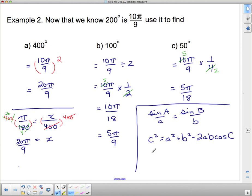...c squared equals a squared plus b squared minus 2ab cosine c. Or the rearranged version of that had cosine c equal to a squared plus b squared minus c squared over 2ab.